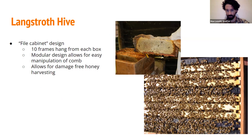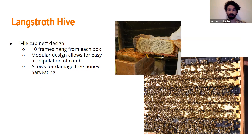The Langstroth hive has a file cabinet frame design. You can see the top of a deep box with bees all over it. The standard design is 10 frames per deep, though beekeepers can use boxes with eight or six frames depending on their preference. The reason this design is so innovative is that it allows for damage-free handling of the bees — you can go into a beehive, sort through everything, check the health of your bees, and harvest honey without destroying the hive in its entirety.